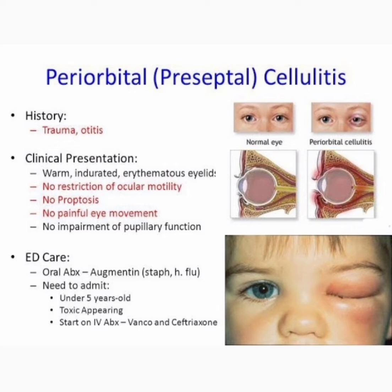ED care is oral antibiotics — that is Augmentin — covering Staphylococcus and Haemophilus influenzae. You need to admit patients under 5 years old who are toxic-appearing, and start IV antibiotics: vancomycin and ceftriaxone.